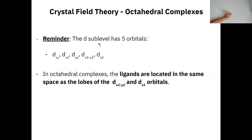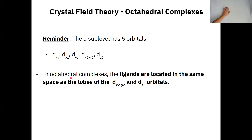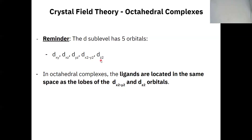There are five orbitals in every d sub-level. When looking at octahedral complexes, which is our main focus in this chapter, there are other structures that exist and you should know what they're called, but you won't be asked specific questions on working with those. We'll stick to octahedral complexes. In octahedral complexes, the ligands attaching to the central metal occupy the same space as the dx²-y² orbital and the dz² orbital.